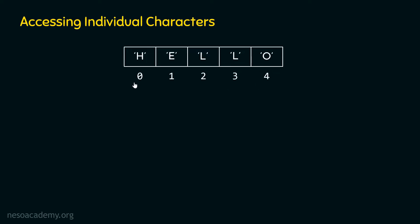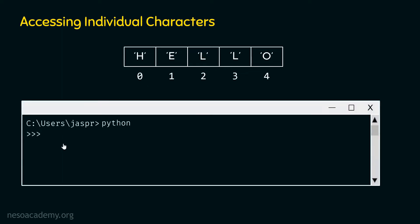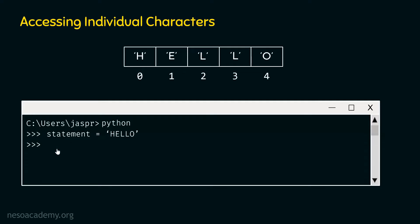Now let's understand how we can access characters of this string. For this, we need to go to our command prompt and type the statement: statement equals hello. We want to assign this hello string to the variable called statement. We can access each character of this string with the help of this variable.